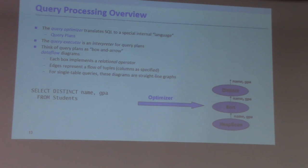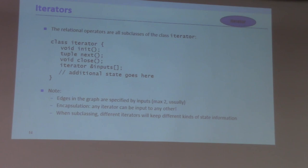A student asks: are there any tricks with DISTINCT — like if you have only three distinct values but a hundred million records, wouldn't that cause really bad performance?